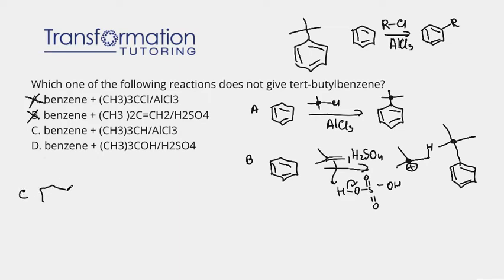Now let's look at choice C. We have a benzene ring and we have (CH3)3CH with AlCl3. So we have this but this one has just a hydrogen with AlCl3. What would this give me? It does look like the Friedel-Crafts alkylation I showed before. However, notice the lack of leaving group such as chlorine. There is no chlorine, there is a hydrogen here.